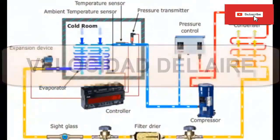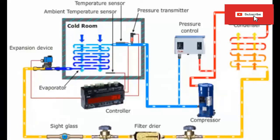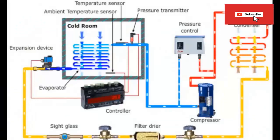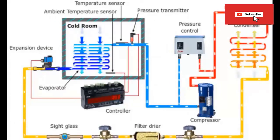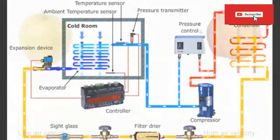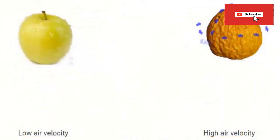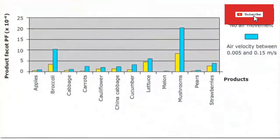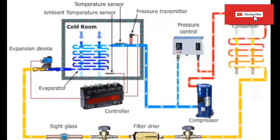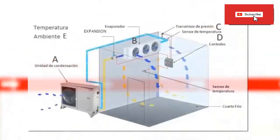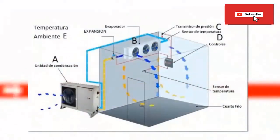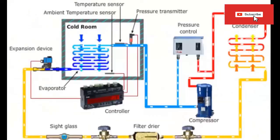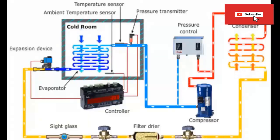Air speed: To understand the control of air speed in a cold room, we are going to analyze the following aspects. A. The cold room controls the speed of the air to avoid dehumidification. B. The high speed of the air increases the coefficients of convection and heat transfer. C. The speed of the air influences the cooling and dehydration of the product. D. Higher air flow velocity increases product heat transfer and dehumidification rate. E. The increase in the rate of dehumidification of the air causes the loss of the water content of the product.